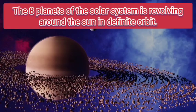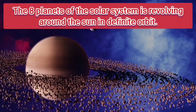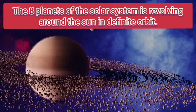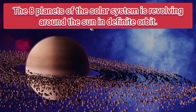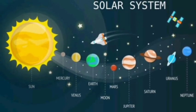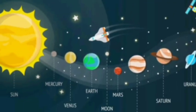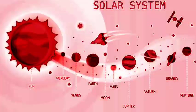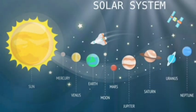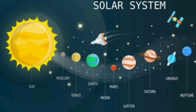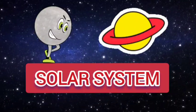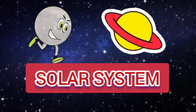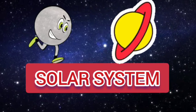There are eight planets in the solar system: Mercury, Venus, Earth, Mars, Jupiter, Saturn, Uranus, and the last one is Neptune. Very good. Let's learn more about solar system.